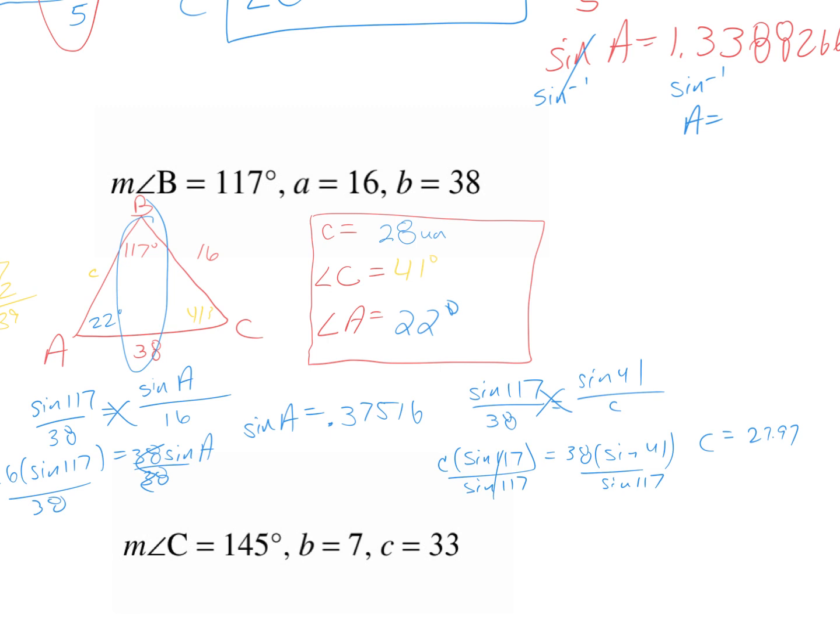How do you know if you got it right? The biggest angle is 117 degrees — is the longest side 38? Yes. The smallest angle is 22 degrees — is the smallest side 16? Yes. The largest angle is across from the longest side, and the smallest angle is across from the smallest side.